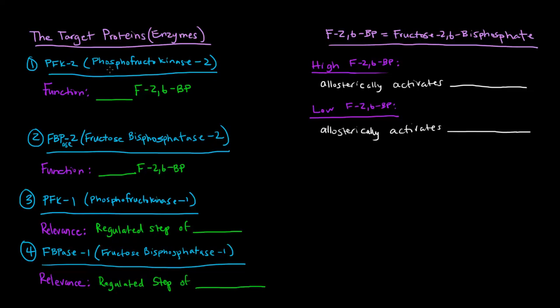So PFK-2 is phosphofructokinase-2, so what that does is that makes F-2,6-BP which is fructose-2,6-bisphosphate, and I'll go over that in just a second. Fructose bisphosphatase-2 degrades F-2,6-bisphosphate.